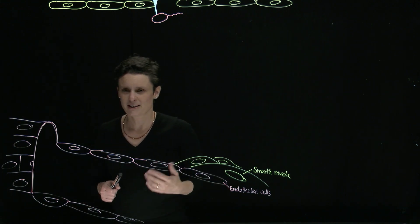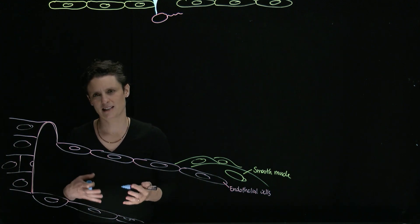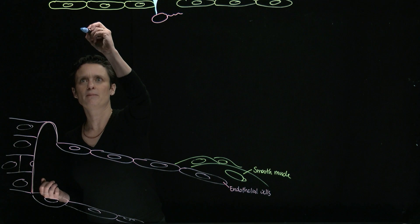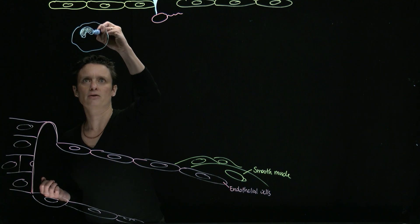Well, the bacteria is going to be greeted by the innate immune system. There are two guards stationed in our tissue. Guard number one is a macrophage. It has this kidney-shaped nucleus.